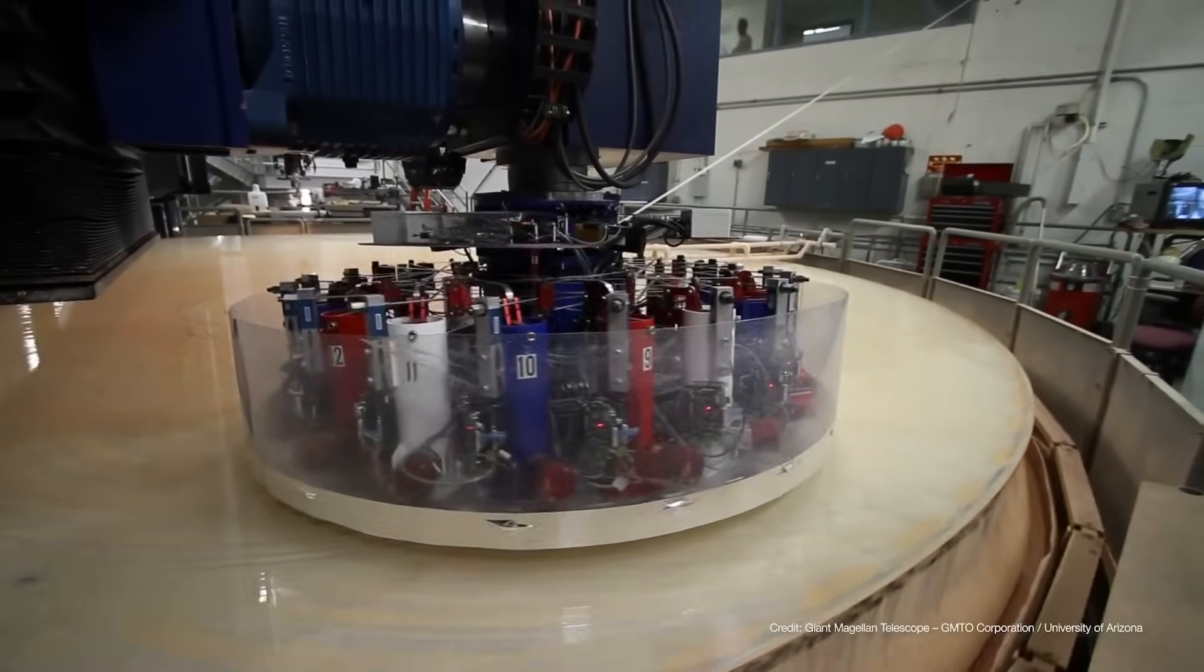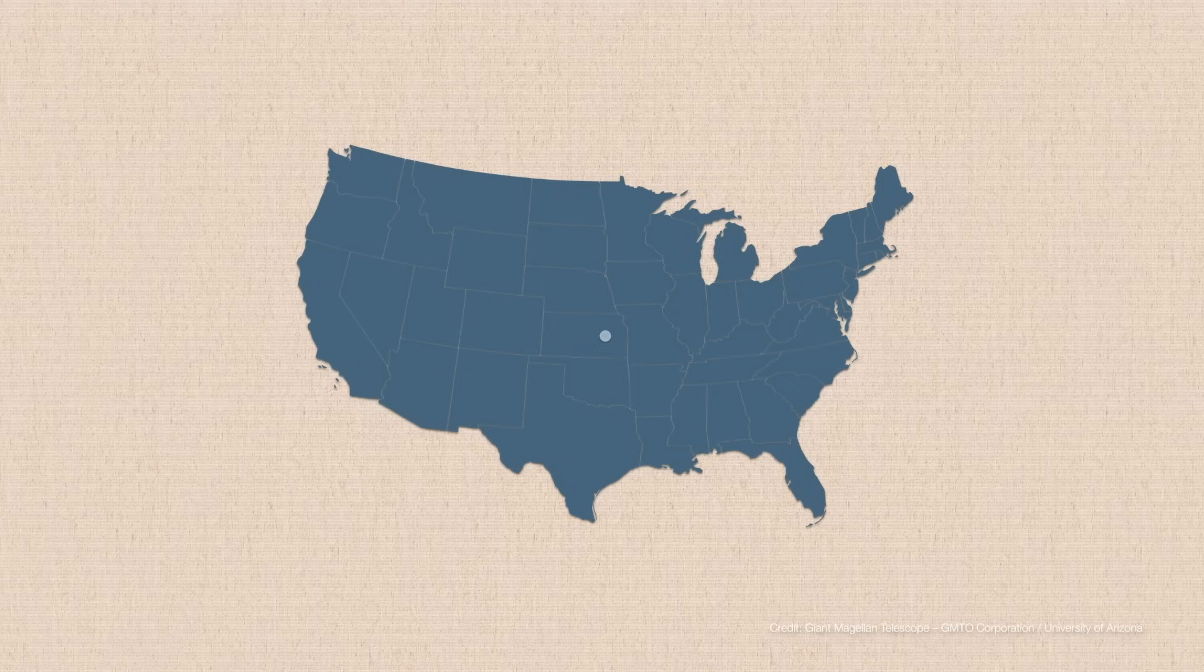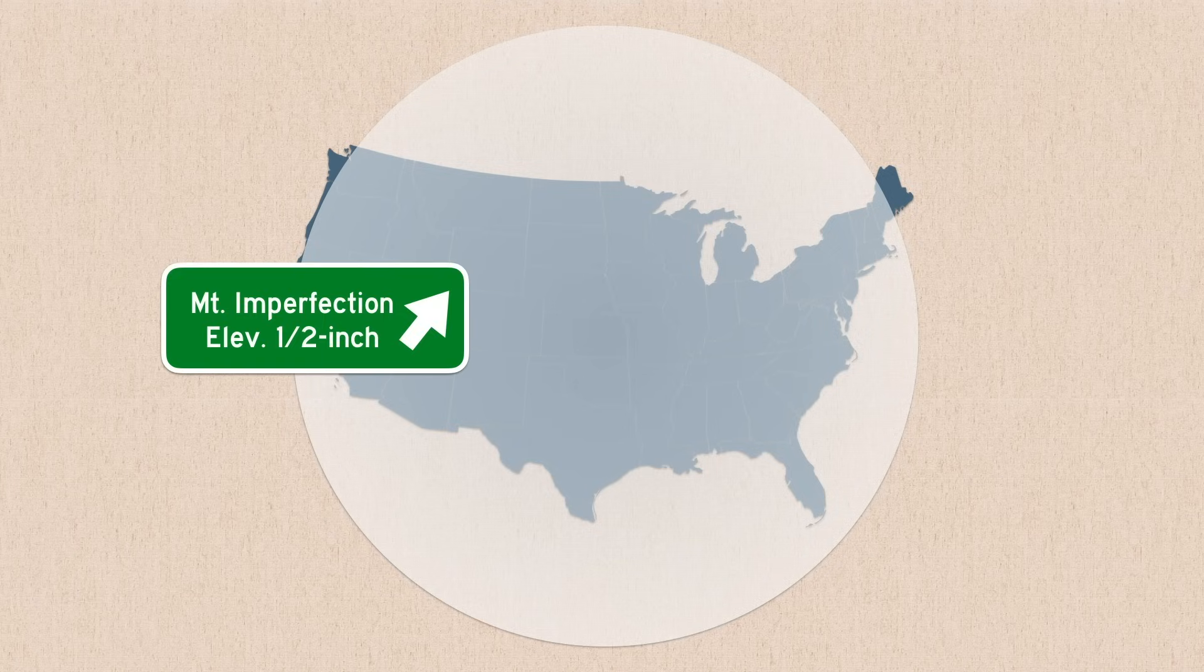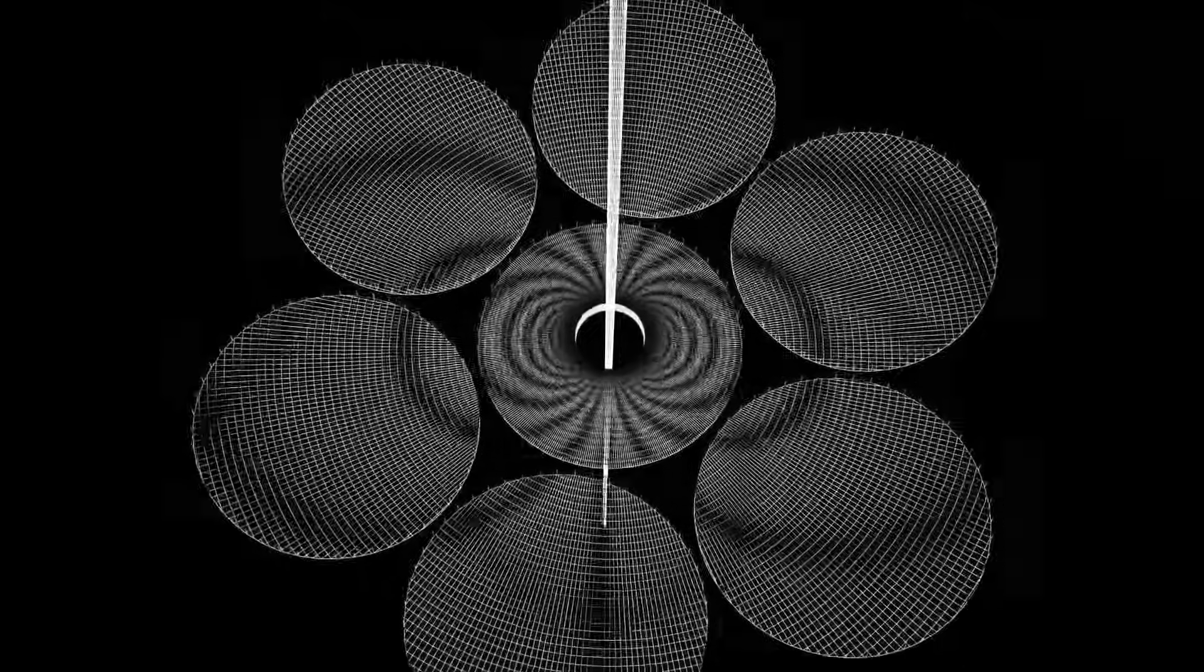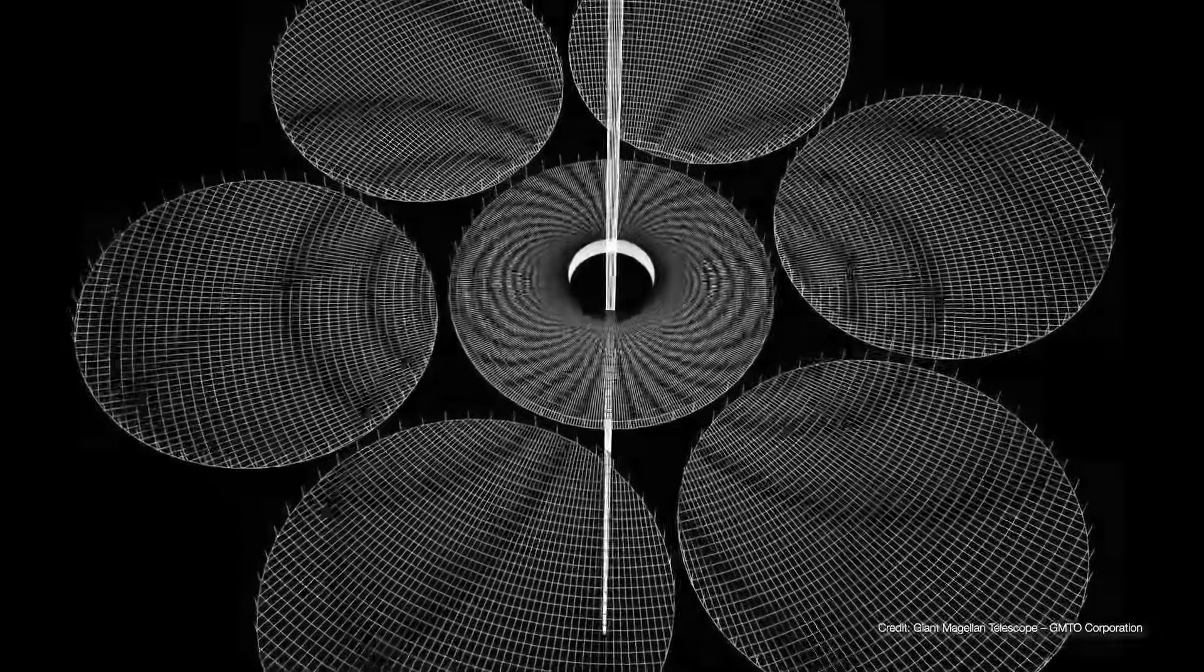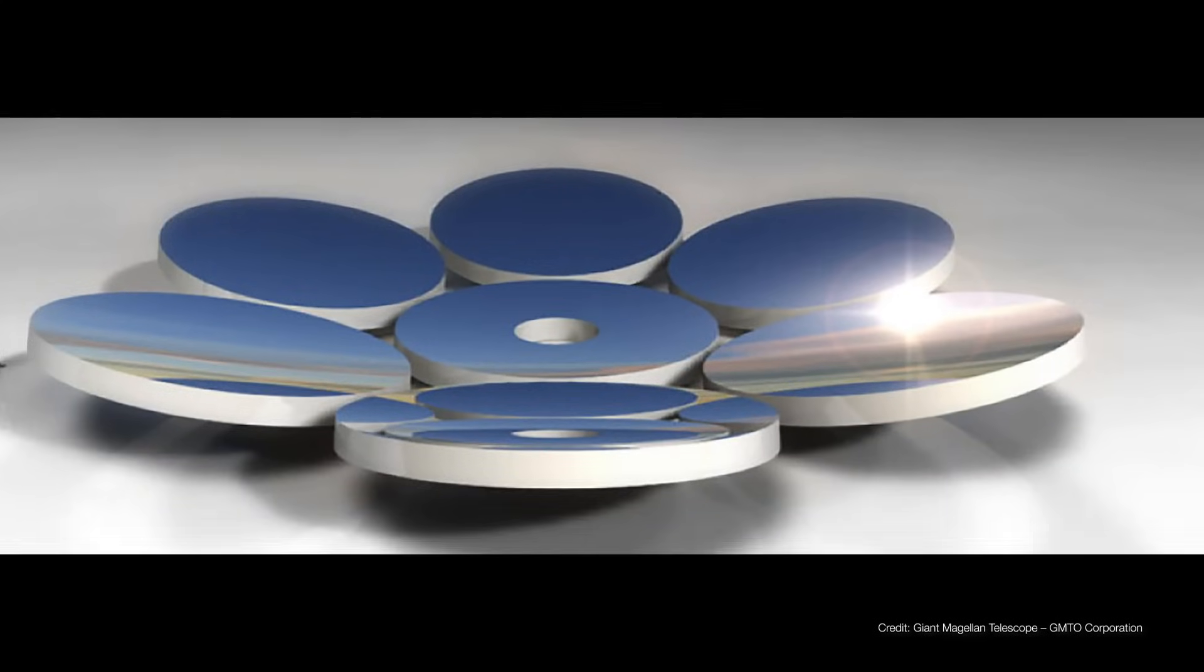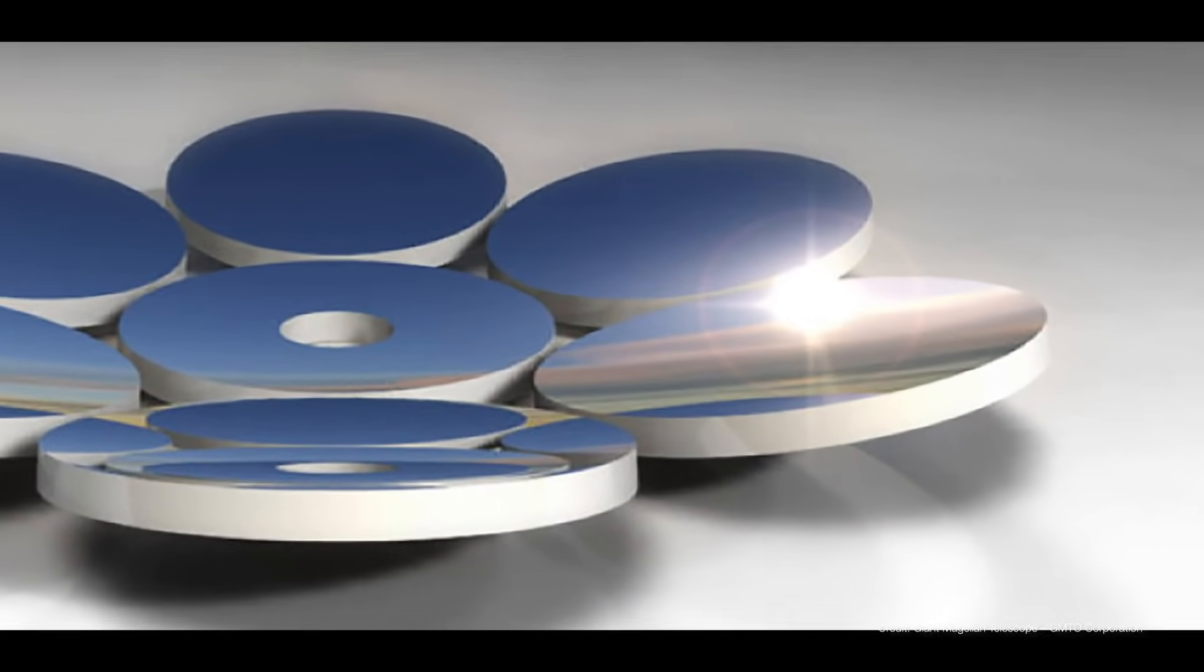In other words, if just one of these mirrors were enlarged to the size of the United States, its largest imperfection would be less than a half an inch tall. Incidentally, the outer mirrors are off the optical axis, so the inner edge of each mirror has to be a little thinner than its outer edge. Kind of like a giant glass potato chip.